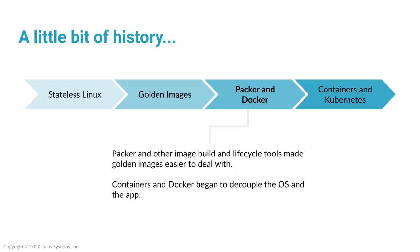Tools like Packer from HashiCorp and Docker came onto the scene. Both had ways to generate golden images based on a descriptor — in Docker's case, a Dockerfile; Packer had a similar mechanism. We started to see tooling emerge that made the image build process less troublesome. There were improvements in cloud APIs to receive these new images, making it easier to iterate, easier to update, and easier to track changes.